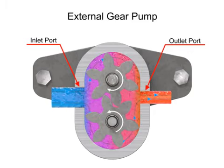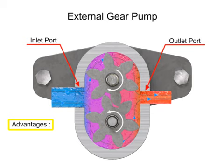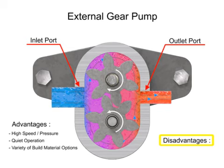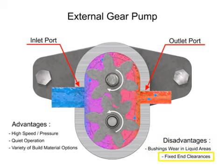The advantages of external gear pumps are their high speed and pressure, relatively quiet operation, and a design that accommodates a wide variety of materials. Disadvantages include bushings in the liquid area that can become worn, and fixed end clearances.